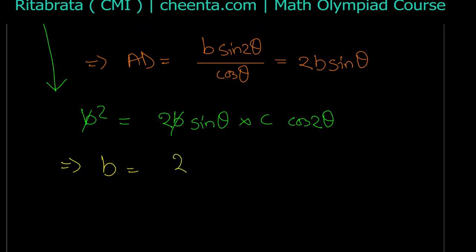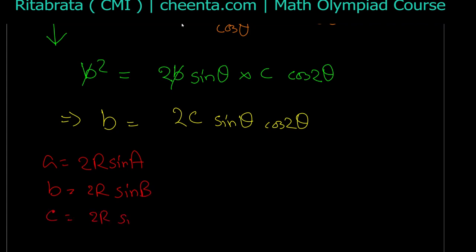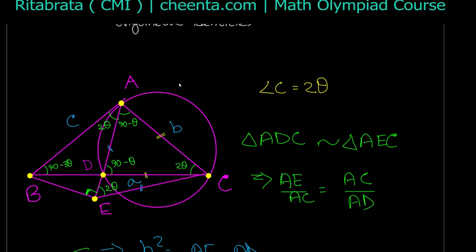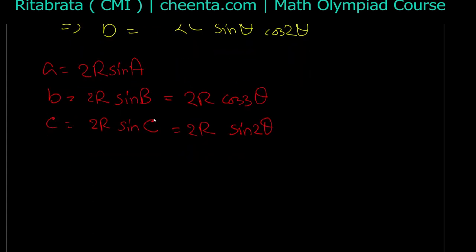Now I apply the sine rule on triangle ABC: a = 2R sin A, b = 2R sin B, c = 2R sin C, where R is the circumradius. Angle B is 90 − 3θ and angle C is 2θ, so b = 2R cos(3θ) and c = 2R sin(2θ). Substituting into b = 2c sin(θ) cos(2θ).